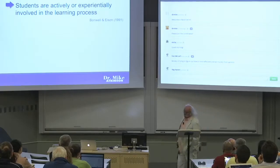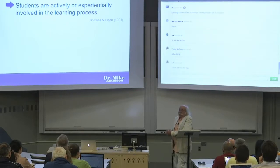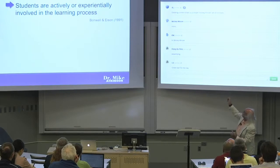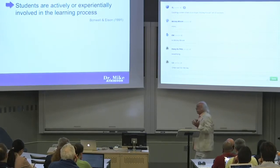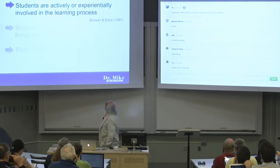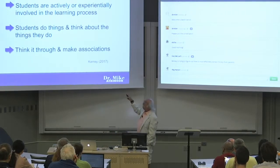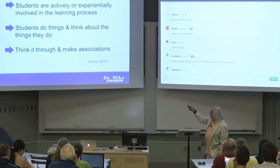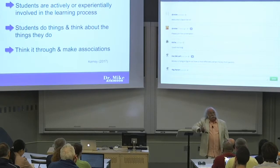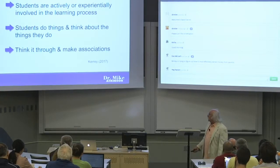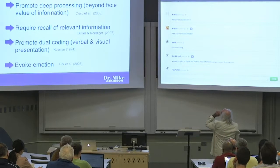What exactly is this stuff that we're calling active learning? I hate definitions because as soon as you define something, there's always exceptions. But nonetheless, it's kind of this sort of thing: students are actively or experientially involved in the learning process. They do things and think about the things that they do. What they do is they think it through and they make associations. This is what Kerry's telling us here because that seems to be an important thing to get some learning done.